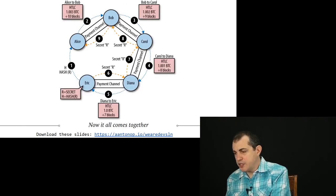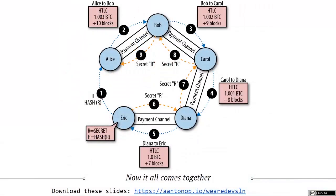Basic payment routing works as follows. In this example, Alice wants to pay Eric. Alice does not have a payment channel directly to Eric, but discovers a path: Alice to Bob, Bob to Carol, Carol to Diana, and Diana to Eric. The first thing that happens is Eric constructs an invoice for Alice to pay. This invoice consists of a hash of the secret R that only Eric knows. Eric randomly generates a secret R, calculates the hash of that secret, and transmits the hash to Alice. That hash tells Alice how she needs to construct the payment.